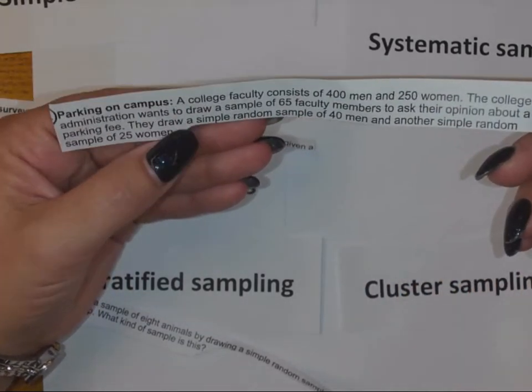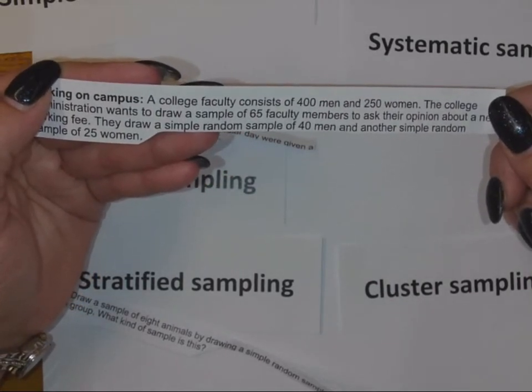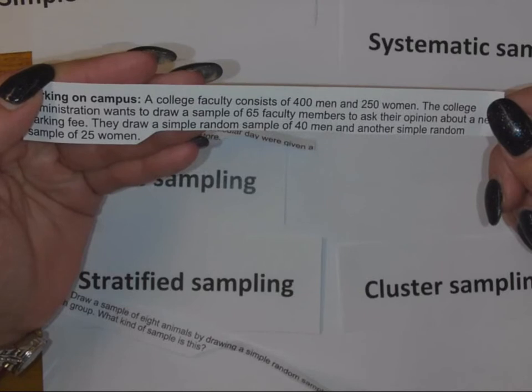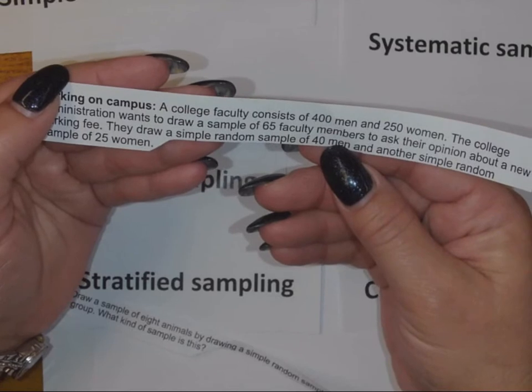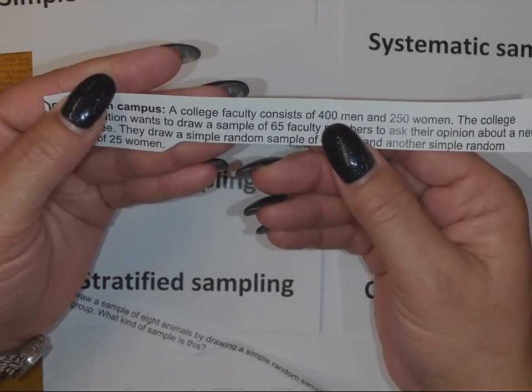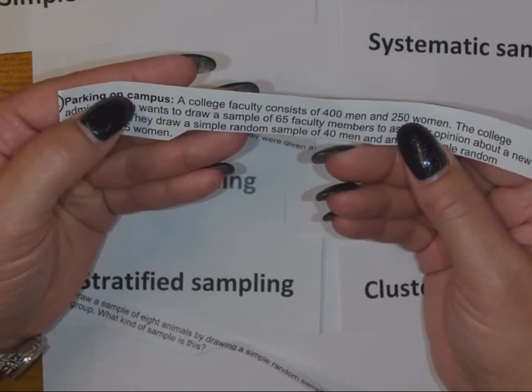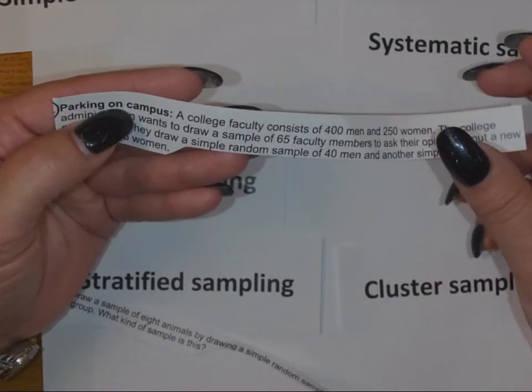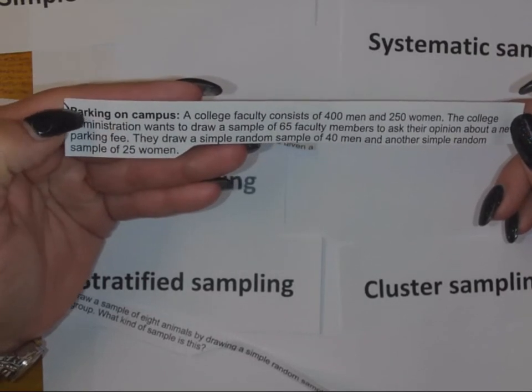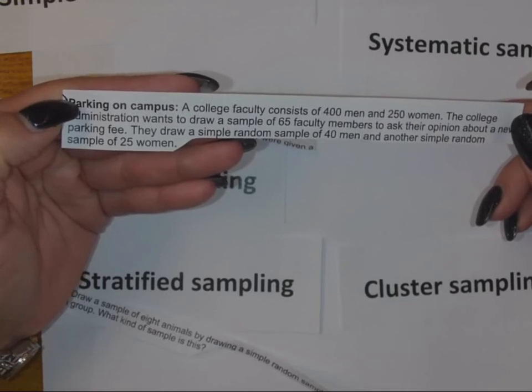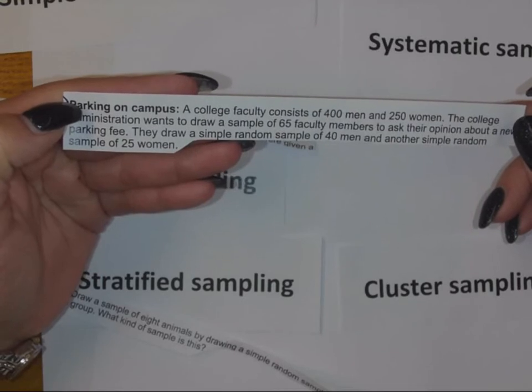They want to ask their opinion about a new parking fee. They draw a simple random sample of 40 men and another simple random sample of 25 women. Why? Because 40 men is 10% of 400, and 25 women is 10% of 250. Basically what they're saying is that they want a sample size of 10% out of each of these groups.